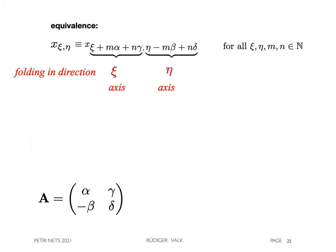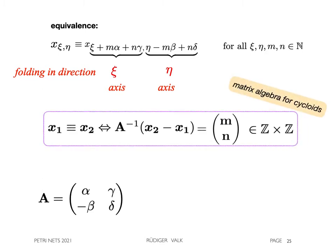For testing equivalents, it is not easy to find the right parameters M and N. The matrix A can be used for a more efficient and algebraic formalism to test equivalents, namely by checking that the application of the inverse of the matrix A to the difference has integer values.